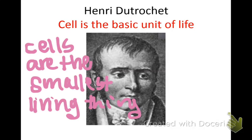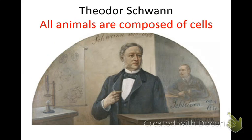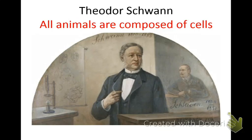The person who came up with that was Henry Dutrichet. Number two: all living organisms are composed of cells. Everything that is alive is made up of cells — plants, animals, mushrooms, bacteria — everything that is alive is made up of cells. Beside that, write as an example: plants, animals, and fungi.